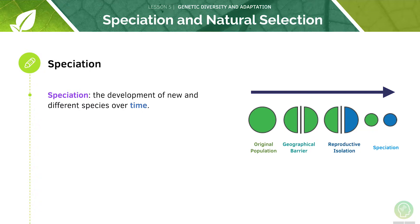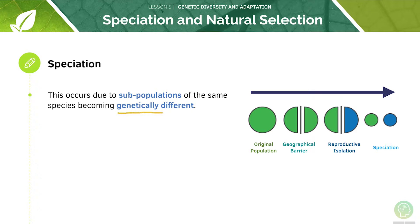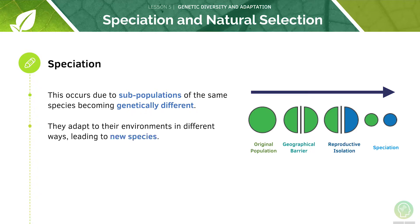Speciation is the development of new and different species over time. This occurs because subpopulations of the same species can become genetically different — they adapt to their environments in different ways, eventually leading to new species.